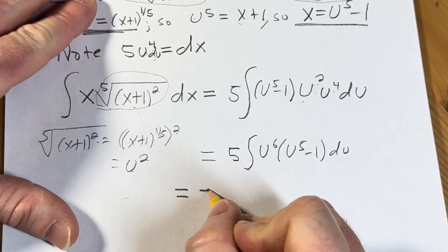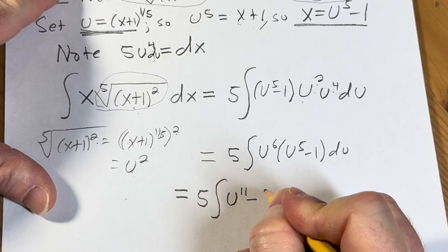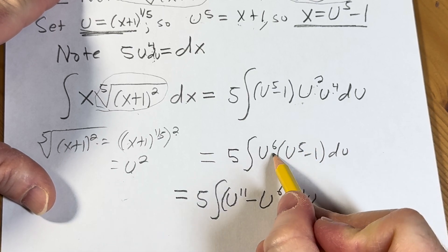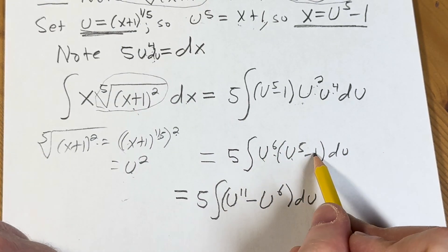And then now we can distribute the u to the 6th. This is equal to 5 times the integral of u to the 11th minus u to the 6th du. Here we just distributed u to the 6th times u to the 5th. You add the exponents. And then u to the 6th times 1 is that.